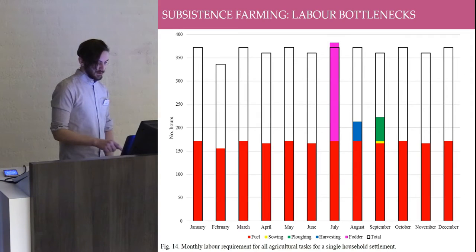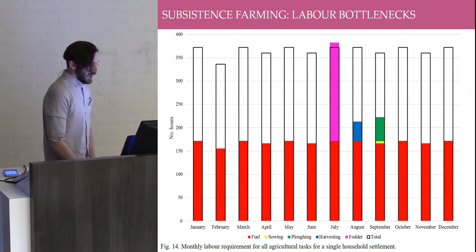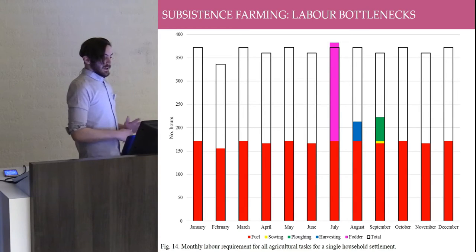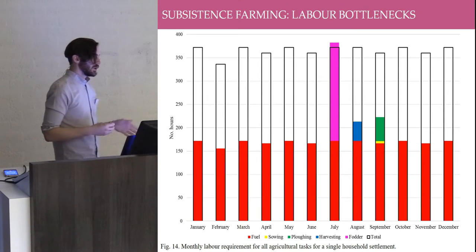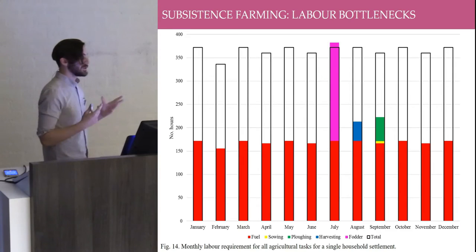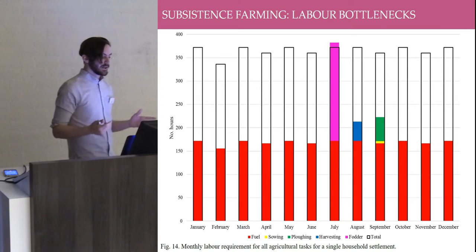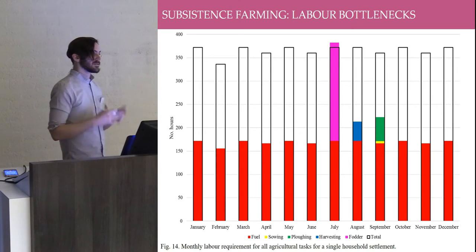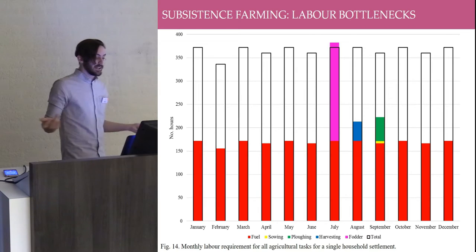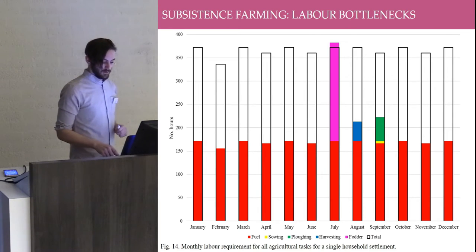This is an example of a potential labour bottleneck in subsistence farming. Here in July, settlements must collect fuel but they also must produce fodder for their animals. For a single household settlement containing only two adults, should one of those adults die, then they have a serious problem in July that they don't have enough labour to fulfil the tasks within the allotted time. The implications for this will need to be discussed.